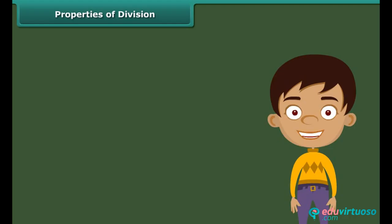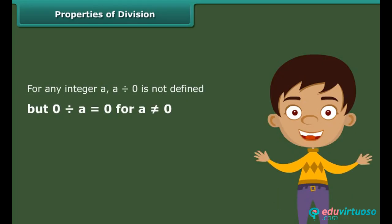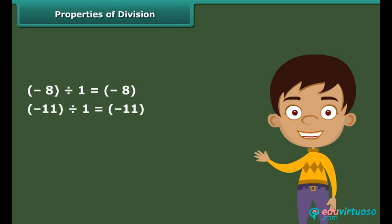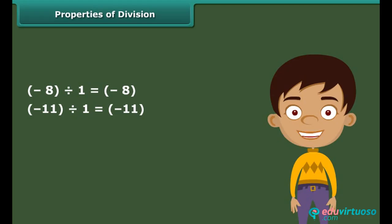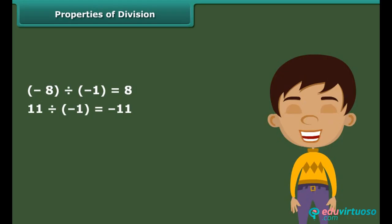Division is not commutative for integers. For example, (−8) divided by (−4) is not equal to (−4) divided by (−8). Any integer divided by zero is meaningless, and zero divided by any non-zero integer equals zero. Any integer divided by 1 gives the same integer — for example, (−8) divided by 1 equals −8, and (−11) divided by 1 equals −11. But if any integer is divided by −1, it does not give the same integer — for example, (−8) divided by (−1) equals 8, and 11 divided by (−1) equals −11.